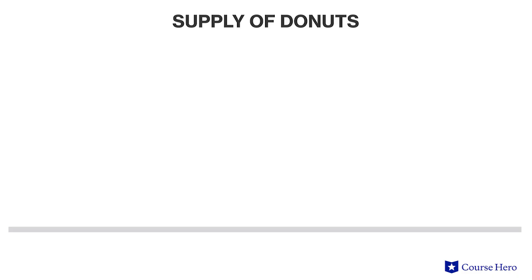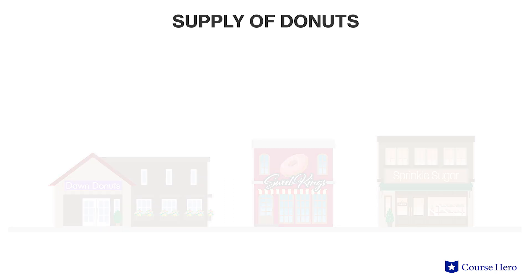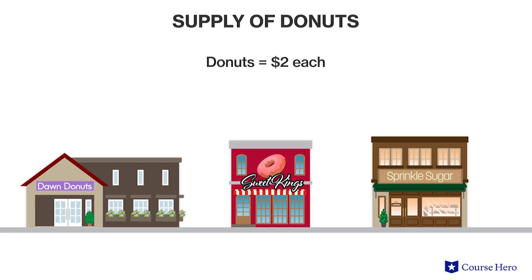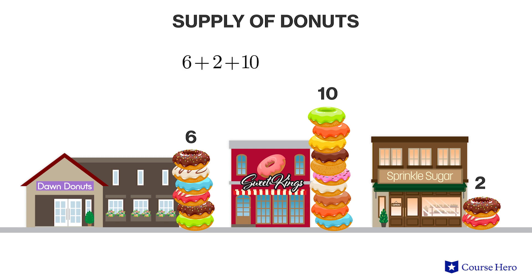Consider a market with three producers: Don Donuts, Sweet Kings, and Sprinkle Sugar. They each supply donuts to their local market but each has different costs and therefore a different willingness to supply donuts at each prevailing price. Donut prices range from $1 to $5. At a price of $2, Don Donuts sells 6 donuts, Sweet Kings sells 10 donuts, and Sprinkle Sugar sells 2 donuts. The number of items supplied by all three producers together is the market supply, which at $2 is 18 donuts.